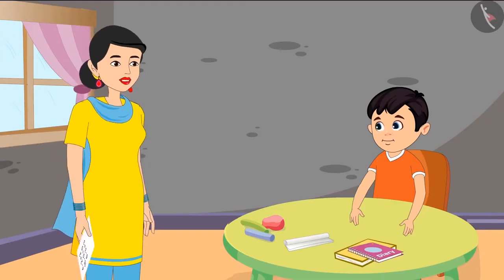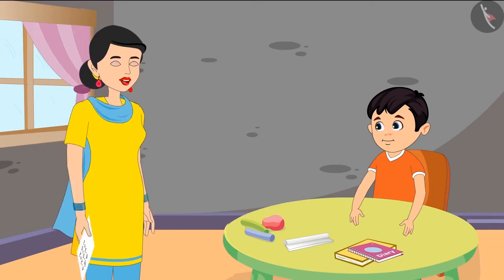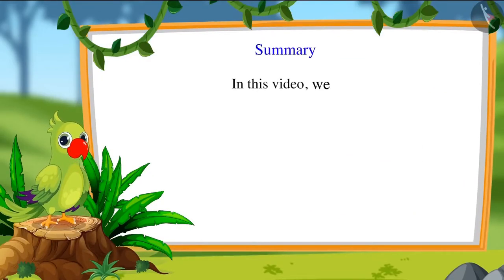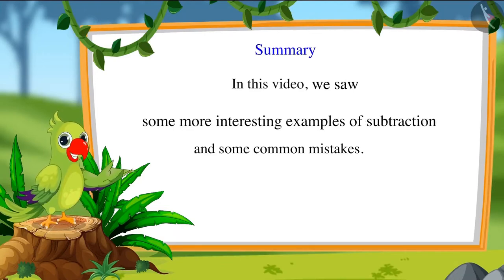Yes Chotu, you are right — 16 dots. So this means: if we subtract zero from any number, or if we subtract nothing from that number, then we get the same number. So kids, that was all for today. In this video we saw some more interesting examples of subtraction and some common mistakes. I hope you have understood this topic very well. Bye friends!